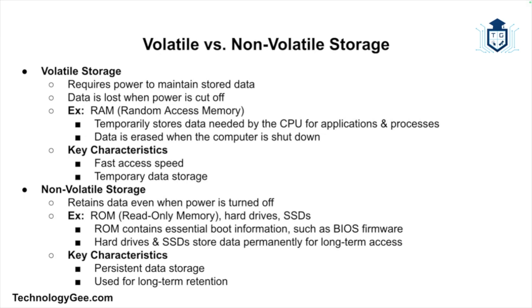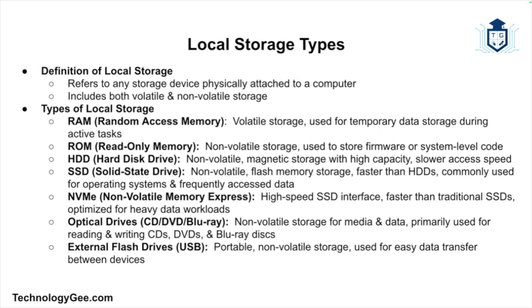In summary, volatile memory like RAM is used for short-term data access and performance, whereas non-volatile storage is used for long-term data retention. Now that we understand volatile versus non-volatile storage, let's move on to local storage types.